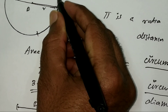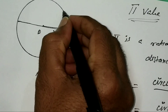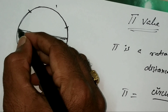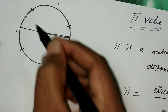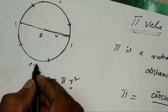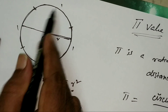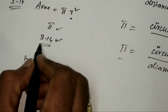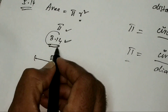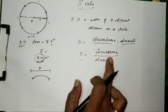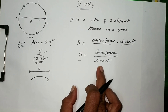When we lay the diameter along the circumference, it fits once, twice, three times — and the remaining part is 0.14 the size of the diameter. So in total: 1 + 1 + 1 + 0.14 = 3.14. That is why we use 3.14 for pi.